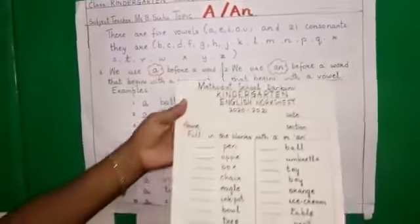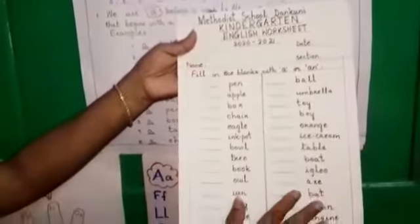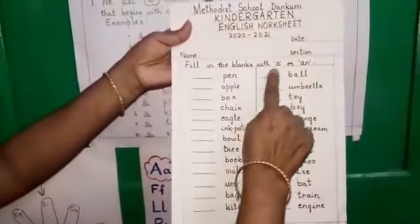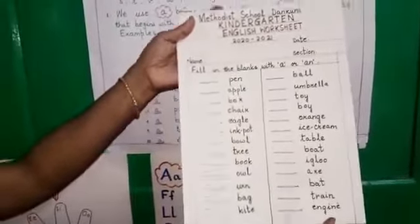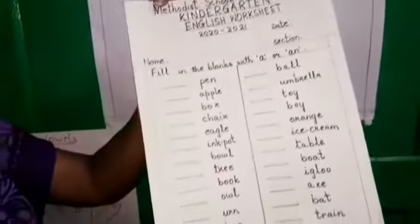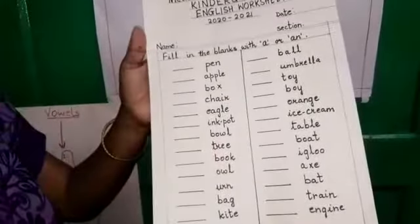This is the chart that you will do for homework. Fill in the blanks with A or An. It is all mixed, A or An. This will be your homework, so please do it. Thank you children.